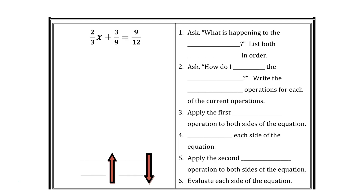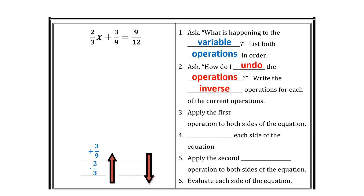When fractions are included in equations, it does not change the method we use to solve the equation. We still start by asking: what is happening to the variable? We list out both operations in order — the order of operations. That variable is being multiplied by 2/3, and then we're adding 3/9. So we need to ask: how do you undo the operations? Write the inverse operations in inverse order. This equation is put together by multiplying x by 2/3 and then adding 3/9. To undo that, subtract 3/9 and then divide by 2/3.